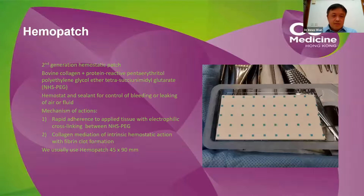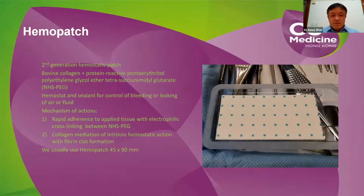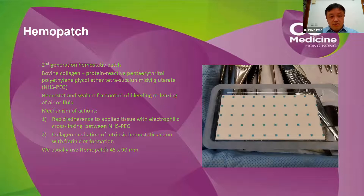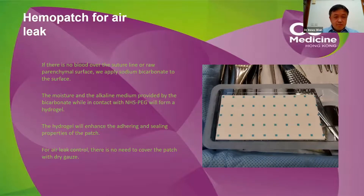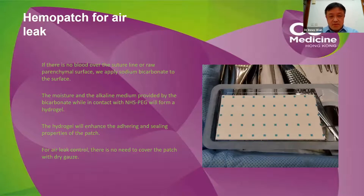HemoPatch is a second-generation hemostatic patch with two components: bovine collagen and polyethylene glycol (NHS-PEG). It provides hemostatic and sealing control for bleeding, air leak, and fluid leak. The mechanism of action includes rapid adherence to applied tissue via electrophilic cross-linking between the NHS-PEG, and collagen-mediated intrinsic hemostatic action with fibrin clot formation. I usually use the HemoPatch 45 × 90 mm, which comes in three different sizes. When used for air leak control rather than hemostasis, there is usually no blood over the suture line, so the area must be moistened with sodium bicarbonate solution.